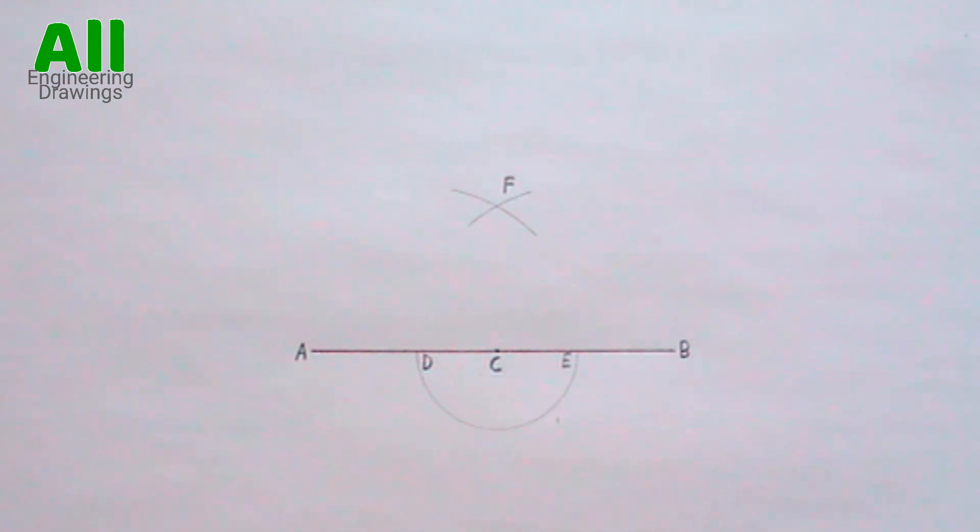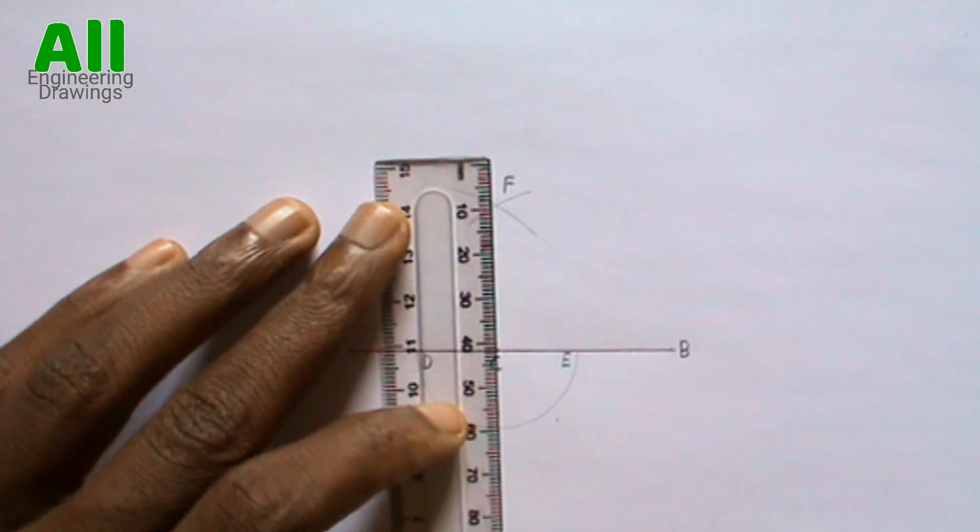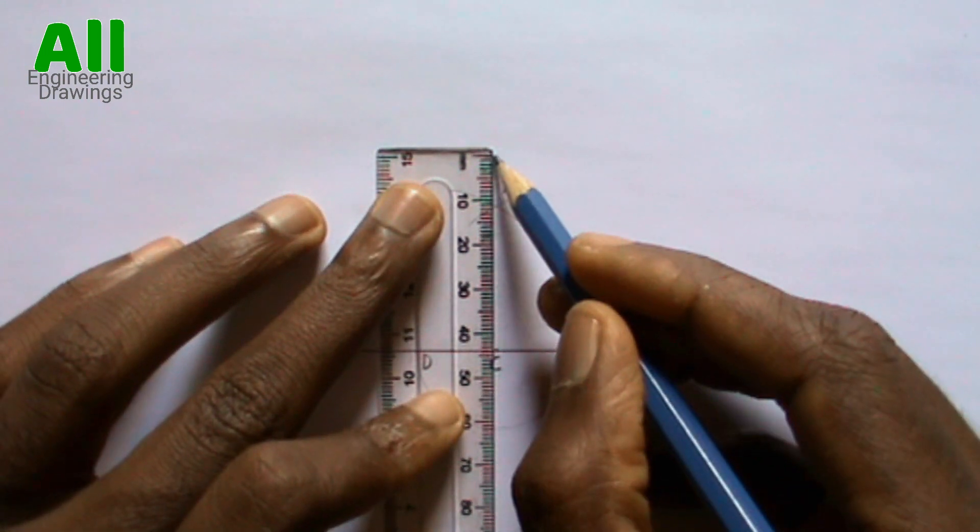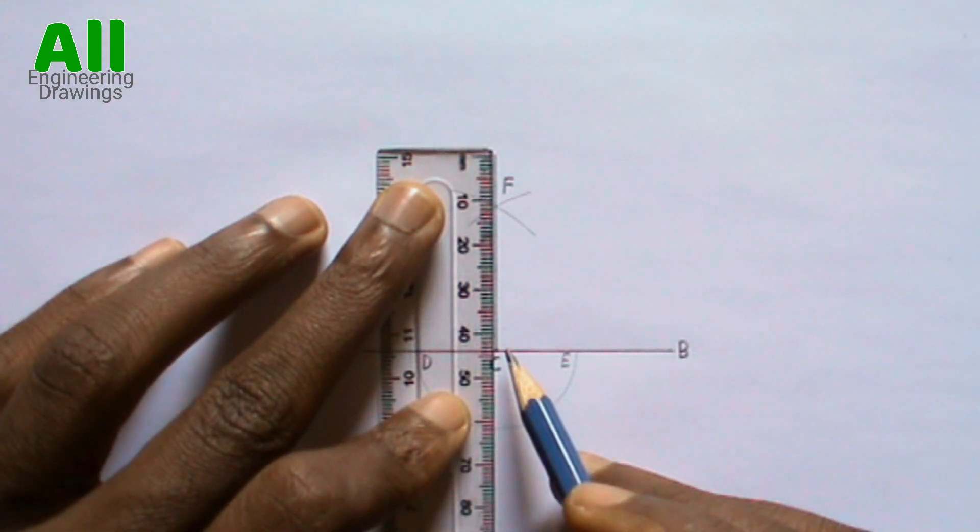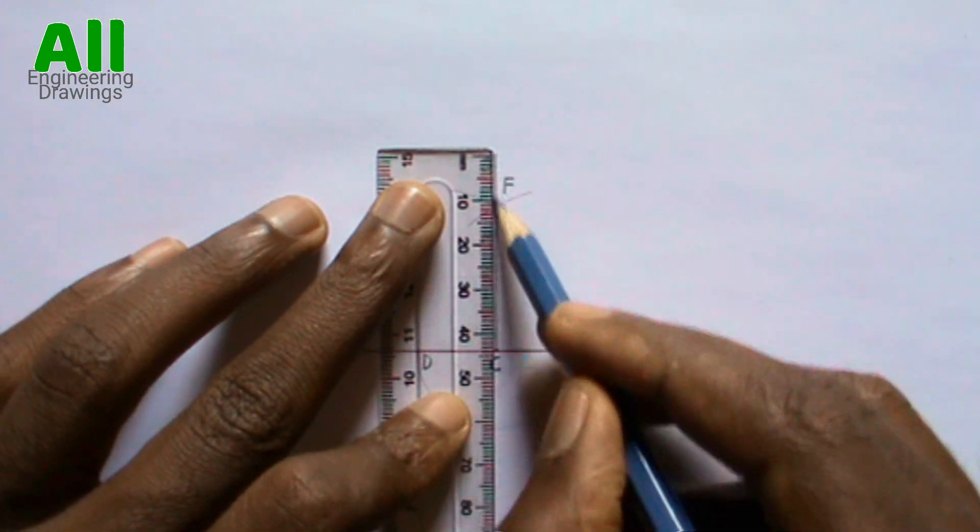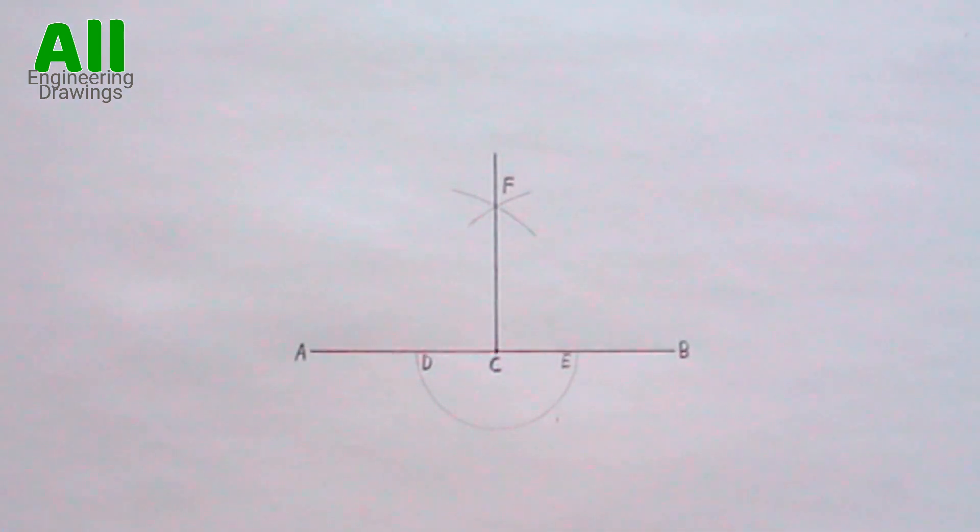Now, draw a line from point C passing through point F, that is the point where the arcs intersect. A perpendicular has been successfully drawn at point C from line AB.